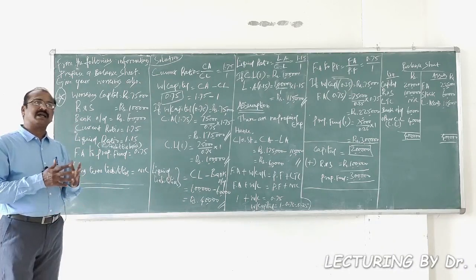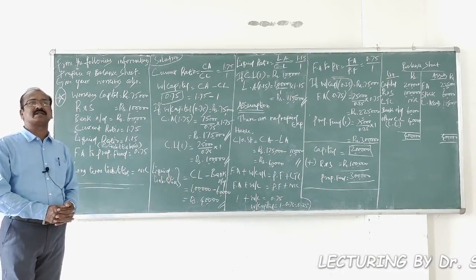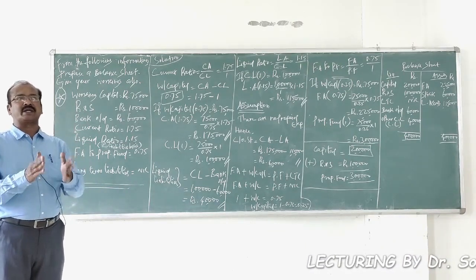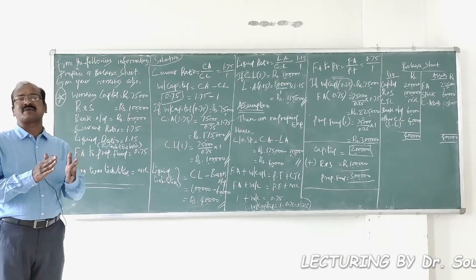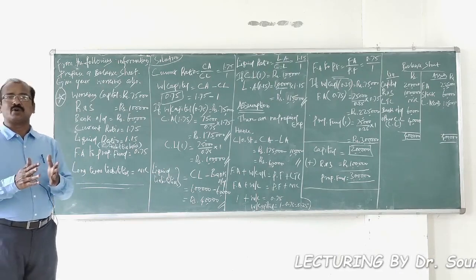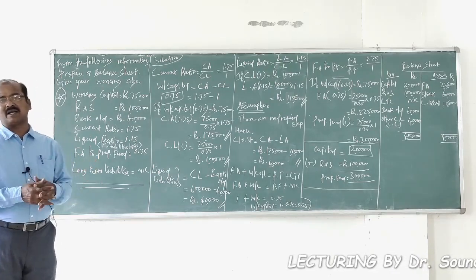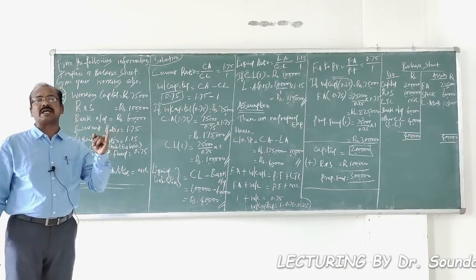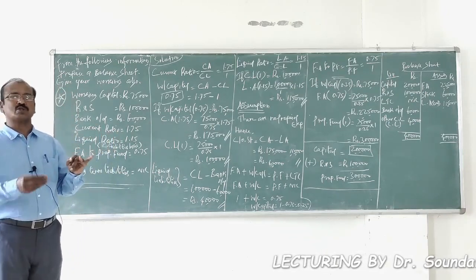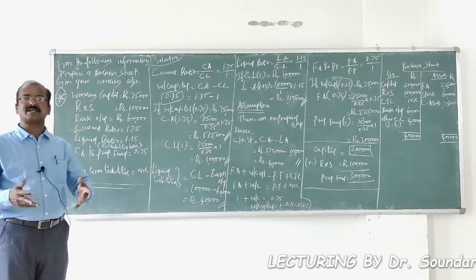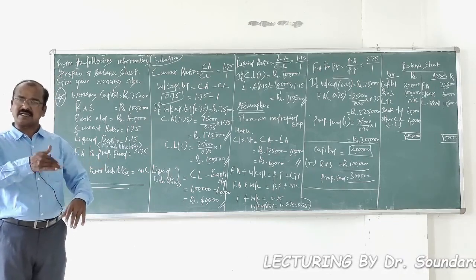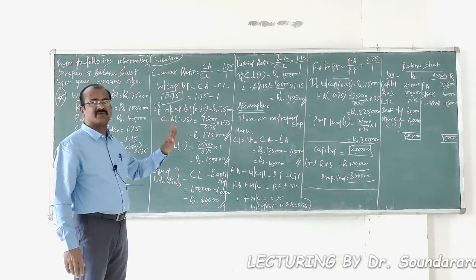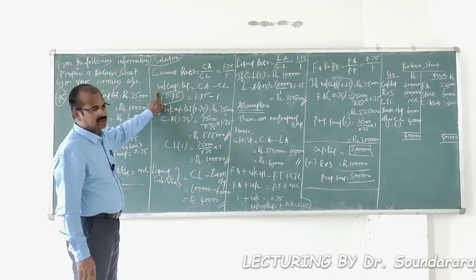As I have explained in my previous videos on ratio analysis, there is always a connection between working capital and current ratio, because working capital is nothing but the excess of current assets over current liabilities. Current Ratio = Current Assets / Current Liabilities = 1.75/1. So let us first use working capital and current ratio to calculate the values of current assets and current liabilities.